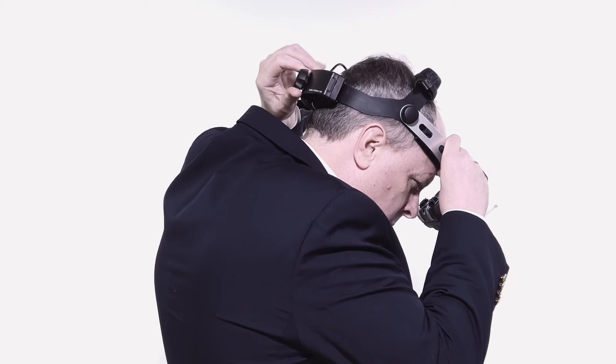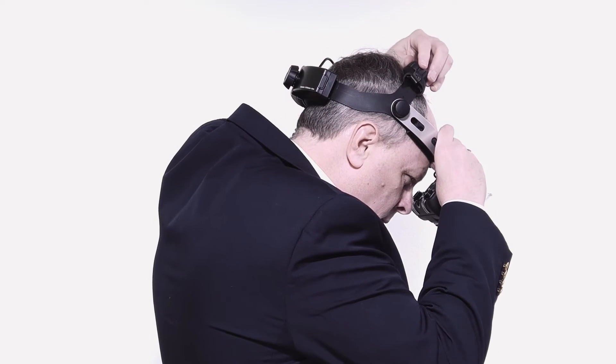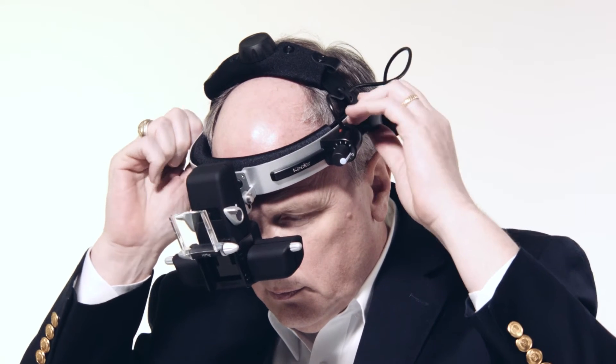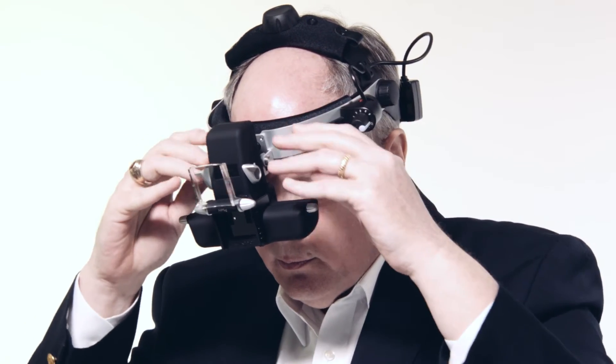Start by adjusting the size of the headband using the knobs on the back and top of the headband so that the instrument fits comfortably around your head. For vertical alignment, adjust the metal brow bar by loosening the tension knobs on the side of the headset.